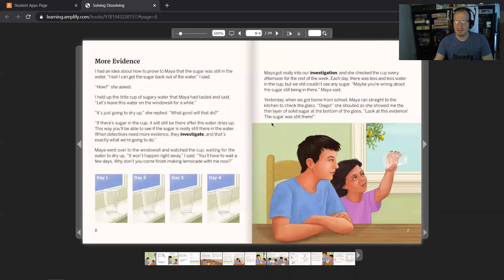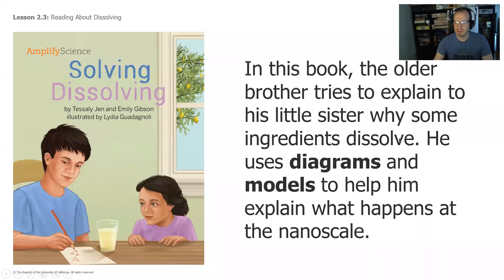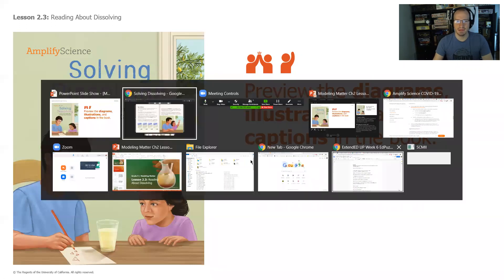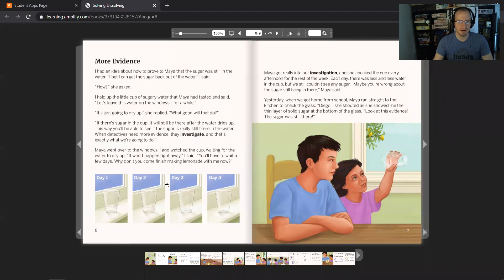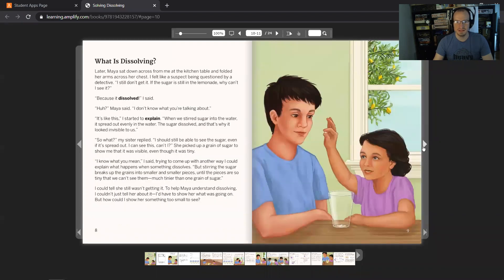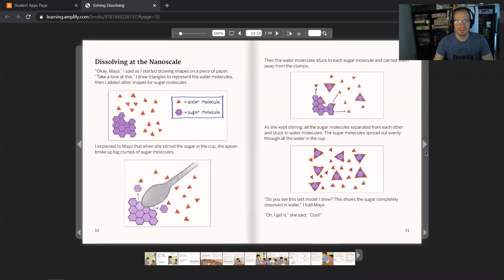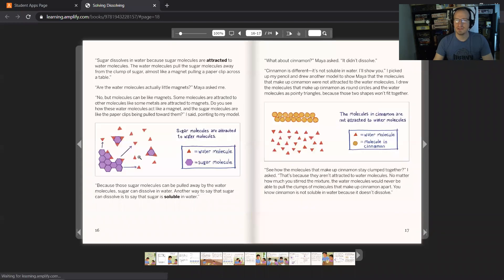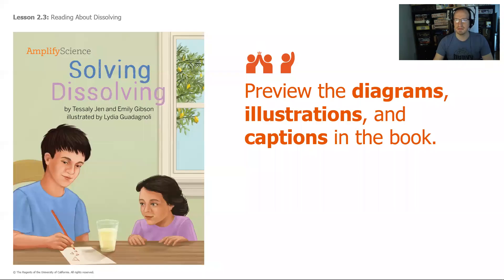Now go to that book and preview the diagrams, illustrations, and captions. You don't want to read through the whole thing right now — just focus on the diagrams, the illustrations, and the captions underneath them. This book doesn't have a lot of captions, but just skim through and look at the pictures, seeing what you notice. Go ahead and fill in a couple things you noticed in the question off to the right.